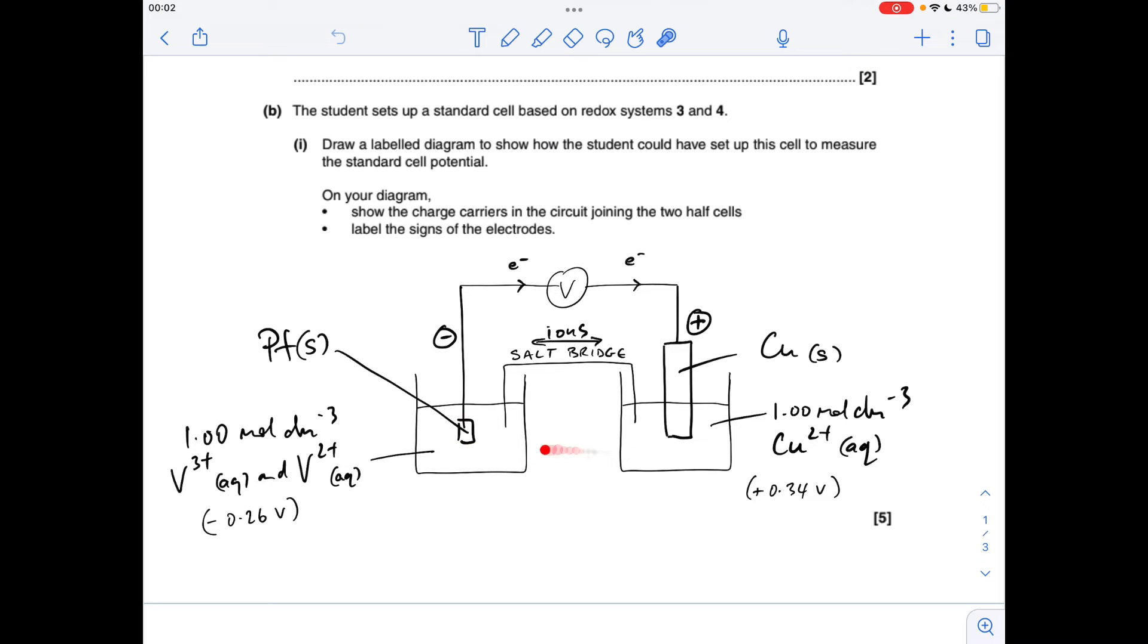So I've got the 1 mole per decimeter cubed solutions of each of those, the platinum electrode, external wire through the voltmeter to the copper electrode, and that's obviously dipping into 1 mole per decimeter cubed solution of copper 2+ ions.